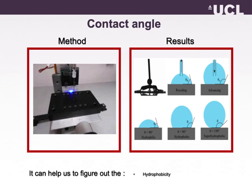If you place your sample on the surface of the machine, there is a needle that you can add water from. Once the water touches the surface of your sample, you can measure the contact angle between your sample and the water. If that angle is more than 90 degrees, that means your sample is hydrophobic.